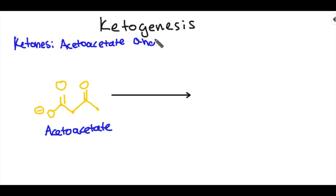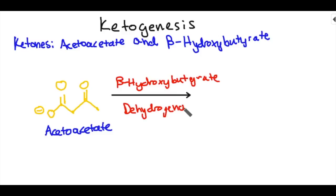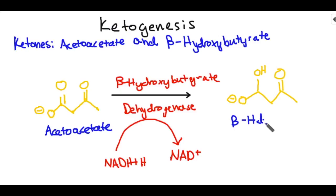Acetoacetate can undergo a reaction to become our second ketone body, beta-hydroxybutyrate. This is done by beta-hydroxybutyrate dehydrogenase, which uses NADH + H+ and converts it to NAD+. This is opposite to what we've usually seen — it makes sense because in this state there's more NADH available. The double-bonded O on the third carbon gets converted to an OH, giving you beta-hydroxybutyrate.